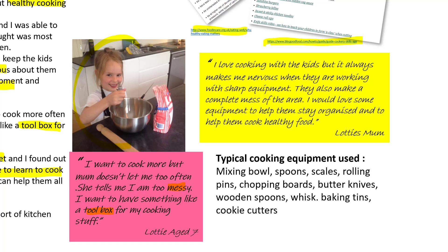I then did a little bit more research talking to people about what they cooked with, because I thought it was important to understand what I actually needed to produce for the kids to cook with. Absolutely standard equipment would be a mixing bowl, spoons, scales, rolling pins, chopping board, butter knives, wooden spoons, whisks, baking tins, and cookie cutters. In the case of Lottie and her mum, some sharp knives were also being used, so that might fall into it.